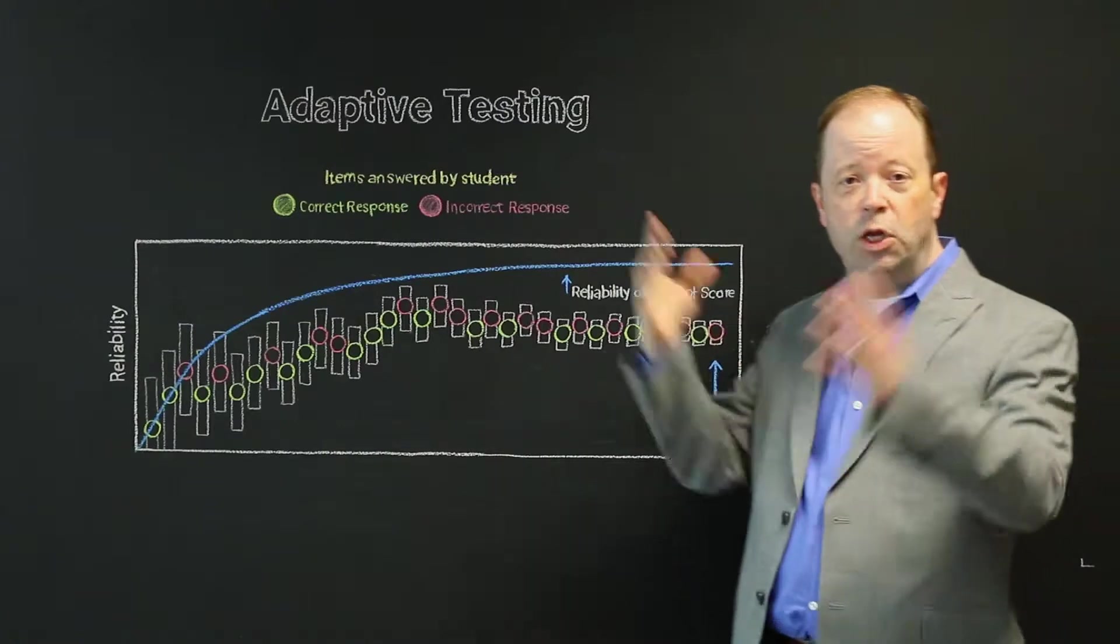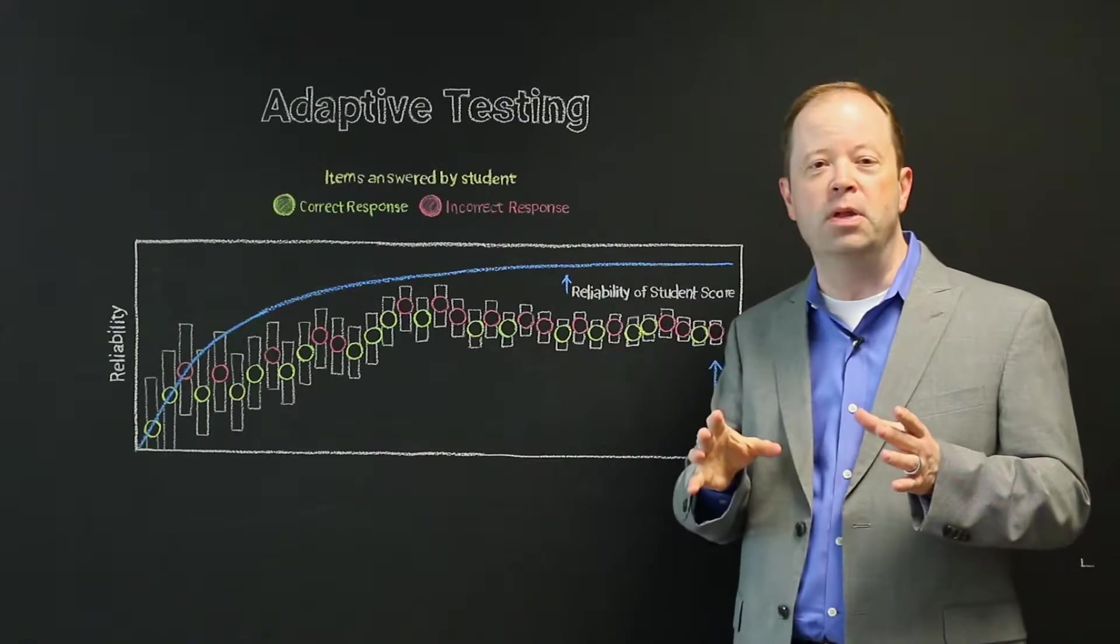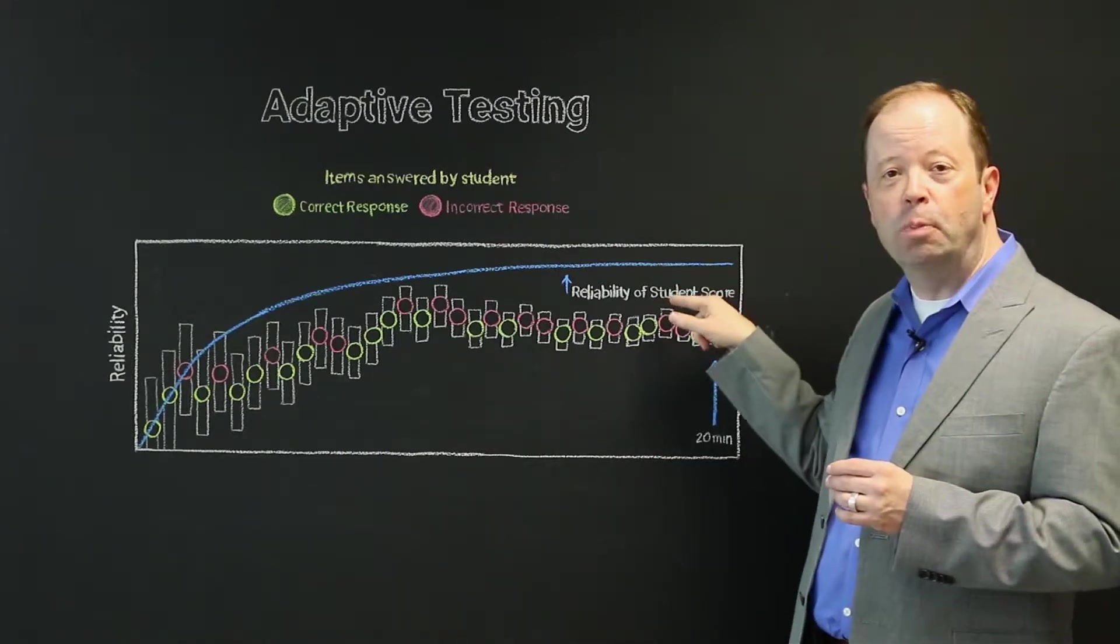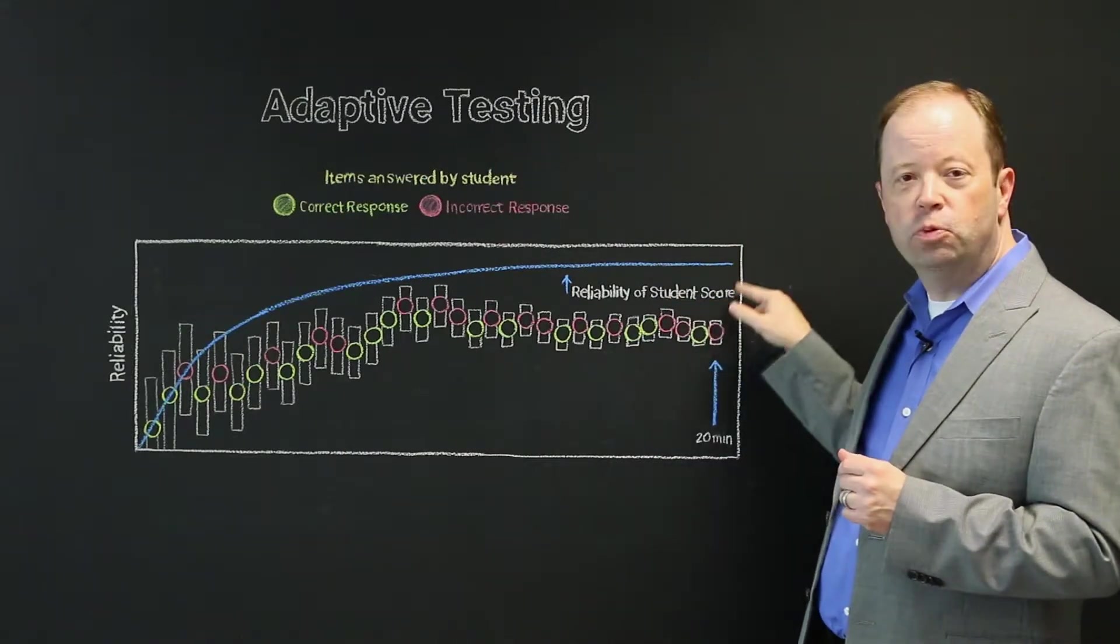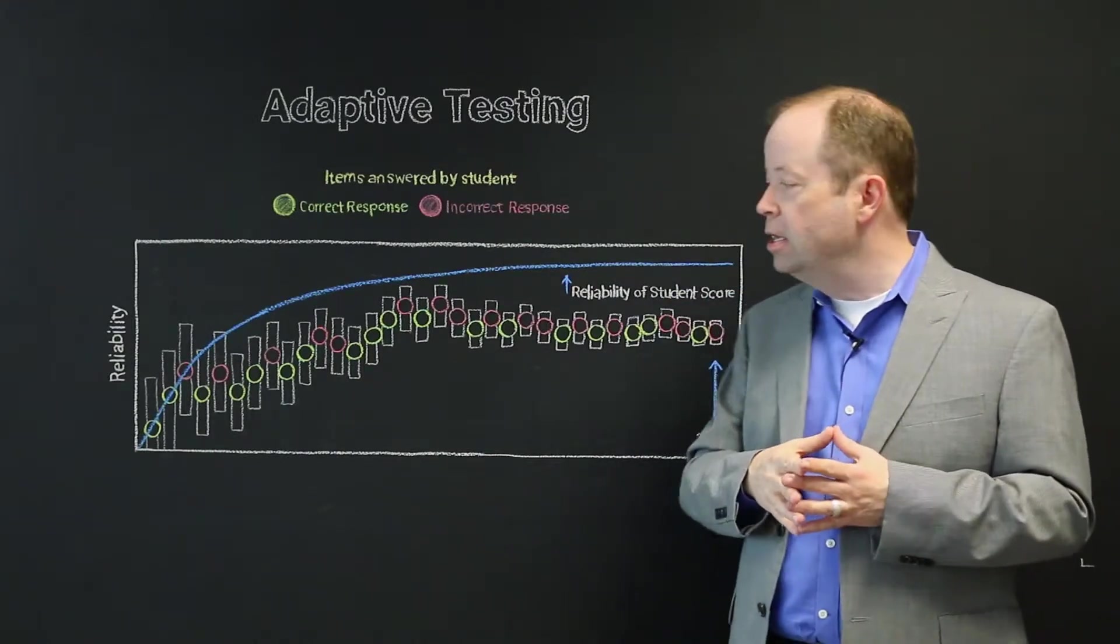We could extend the test. We could have more questions. And they would increase reliability slightly, but we believe that this is the sweet spot. This is the most reliable score achieved in the shortest amount of time.